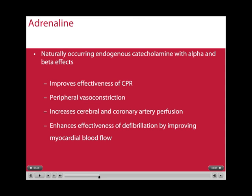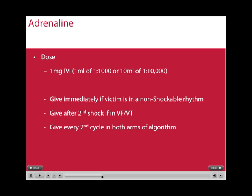Adrenaline is a naturally occurring endogenous catecholamine with alpha and beta receptor effects. It improves the effectiveness of CPR by causing peripheral vasoconstriction and increasing cerebral and coronary artery perfusion, which enhances the effectiveness of defibrillation by improving myocardial blood flow. The normal dose is 1mg intravenously or intraosseously. Give adrenaline immediately for non-shockable rhythms such as PEA or asystole, and after the second shock for shockable rhythms such as VF or VT.